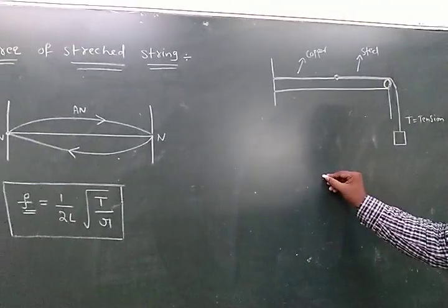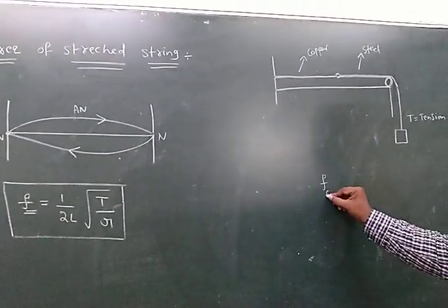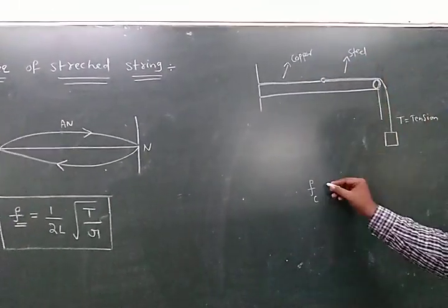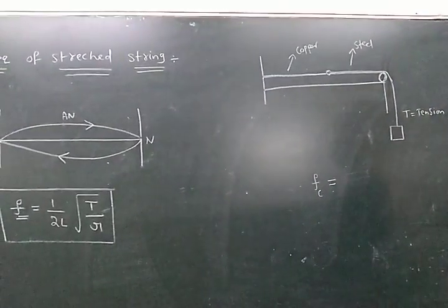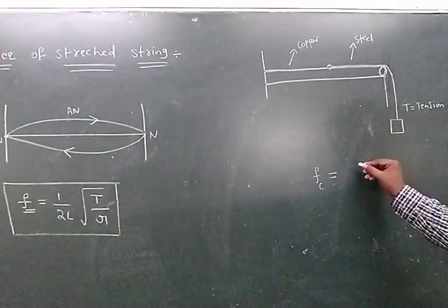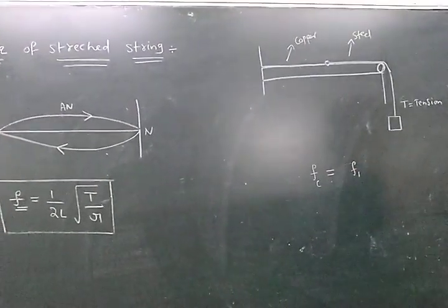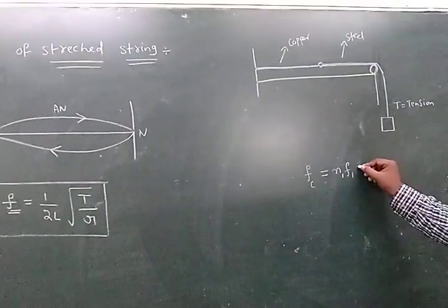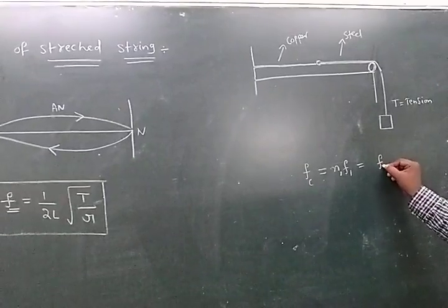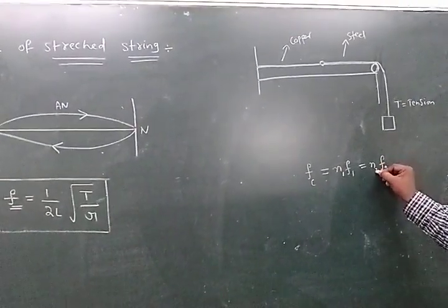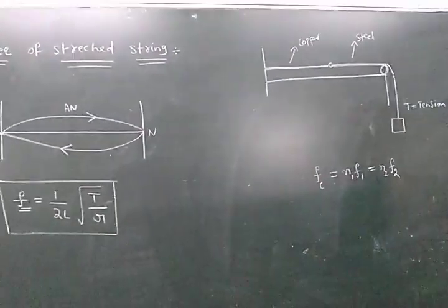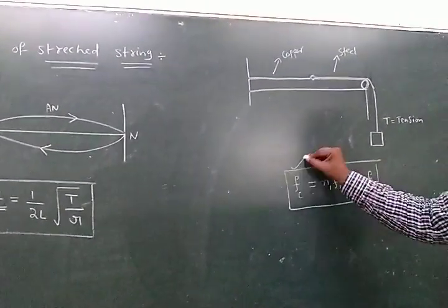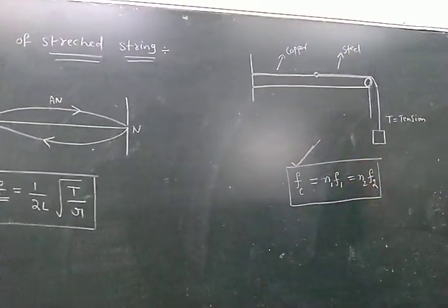In this case, the frequency formula for a composite wire — composite wire means copper wire joined with steel wire — the frequency of the composite wire is equal to N1 × F1, which equals N2 × F2. N1 is the number of loops formed in the first wire, and N2 is the number of loops in the second wire. This formula can be used to find the frequency of the composite wire.